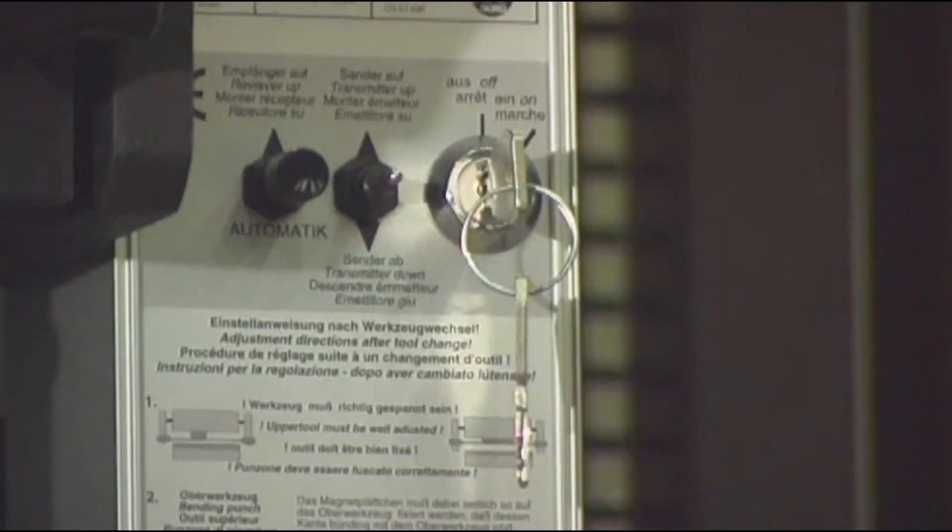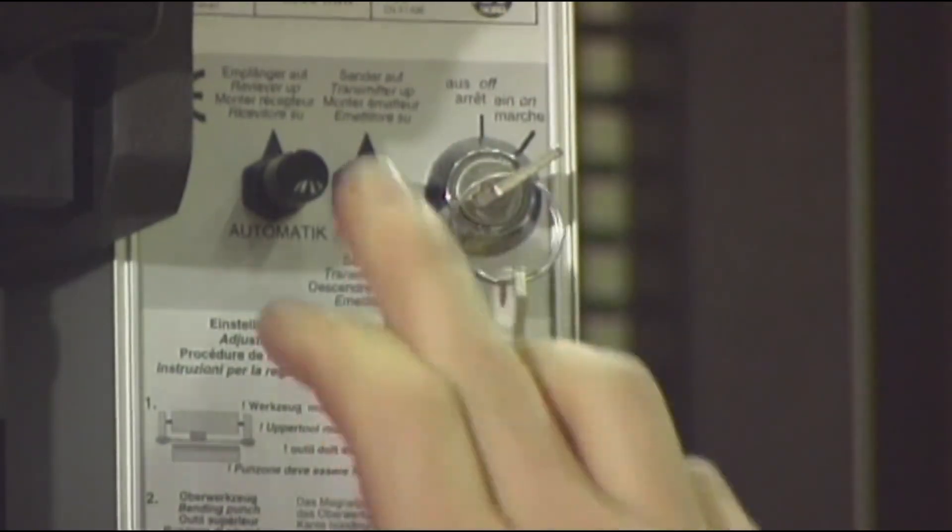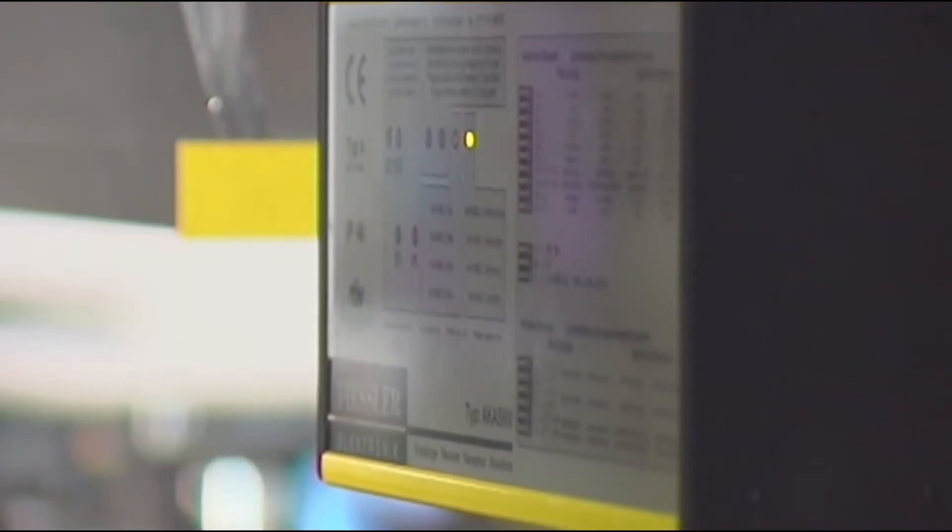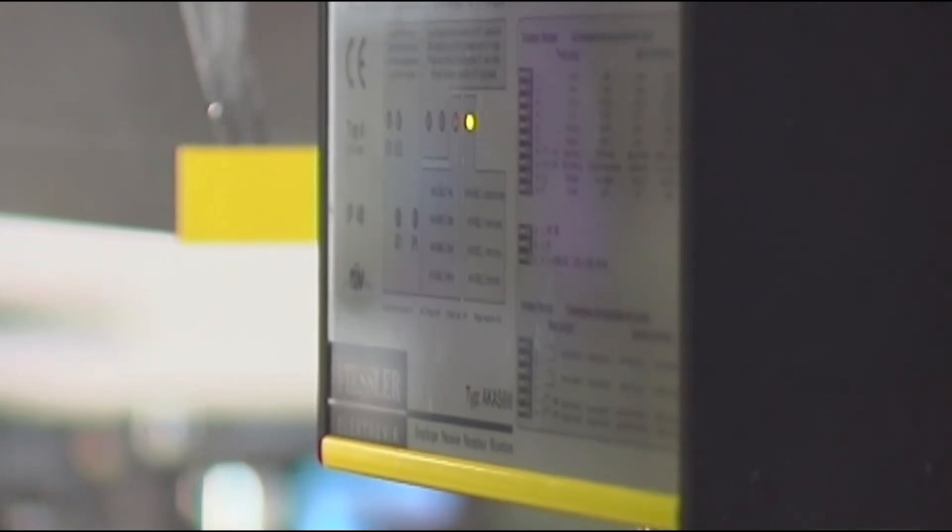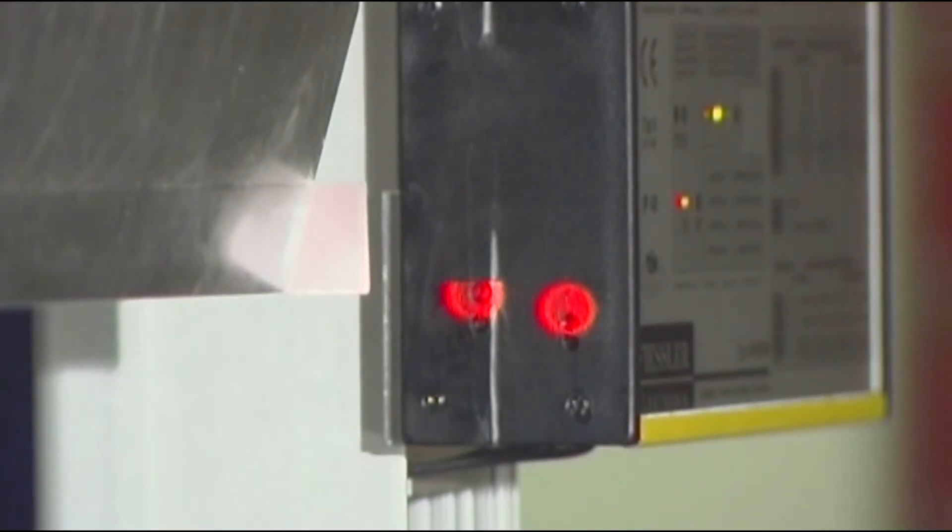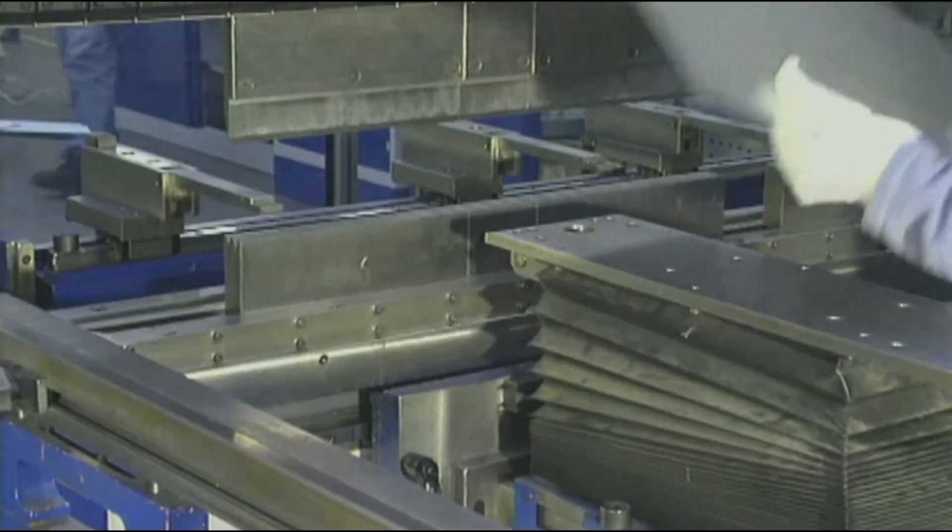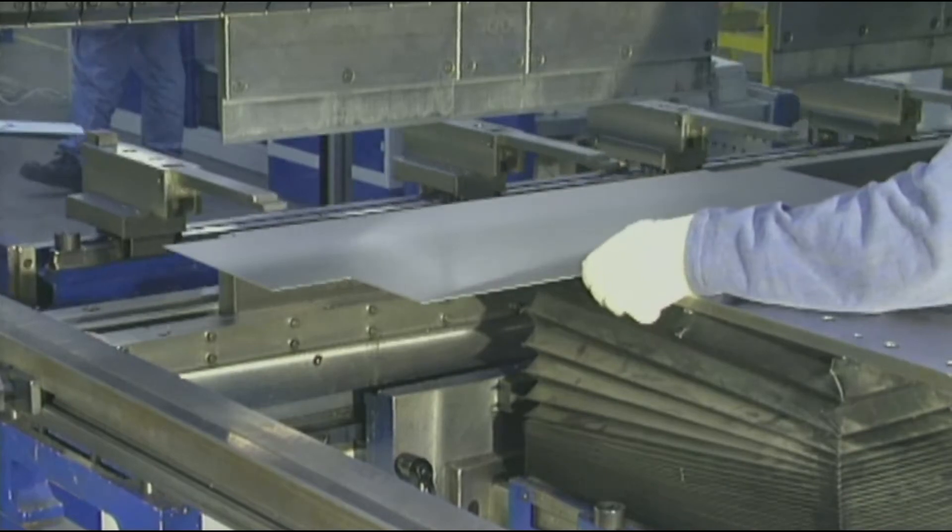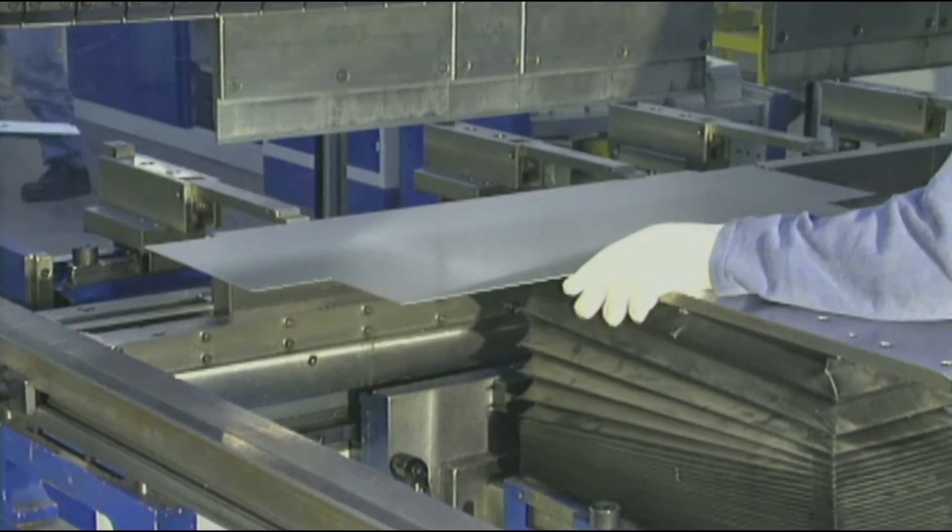If, for example during a tool change, a high punching tool is exchanged for a smaller one, then the ACAS-2 will automatically adjust to the new tool. This saves manufacturing time and removes the chance of human error. The time which would have been necessary to adjust the ACAS-2 can be used for carrying out other tasks. This is possible because the values for overrun traverse and other safety features have already been entered into the system.